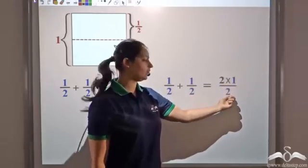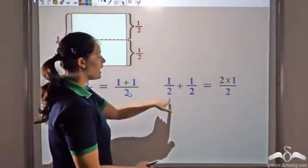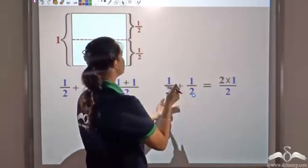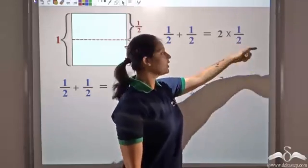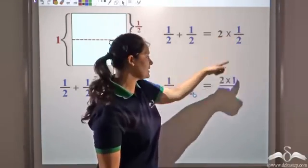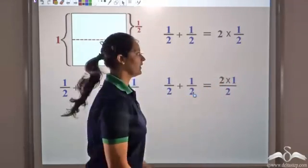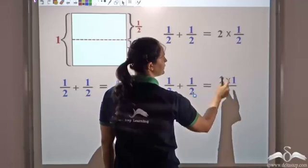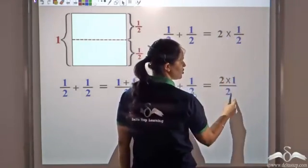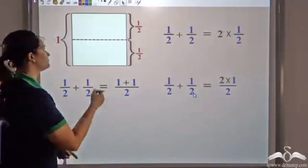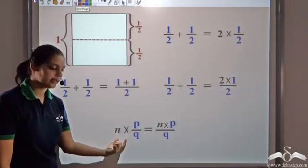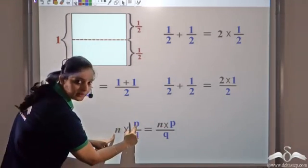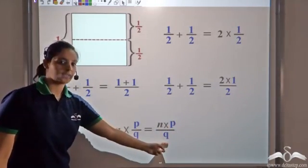Half plus half can be said to be equal to 2 times 1 by 2. Half is being added 2 times, and repeated addition gives multiplication, so half plus half is 2 times half. So 2 times half is the same as 2 into 1 by 2. When multiplying a number with a rational number, the denominator remains the same and that number gets multiplied by the numerator. So for any integer n multiplied by a rational number p by q, the result is np by q.